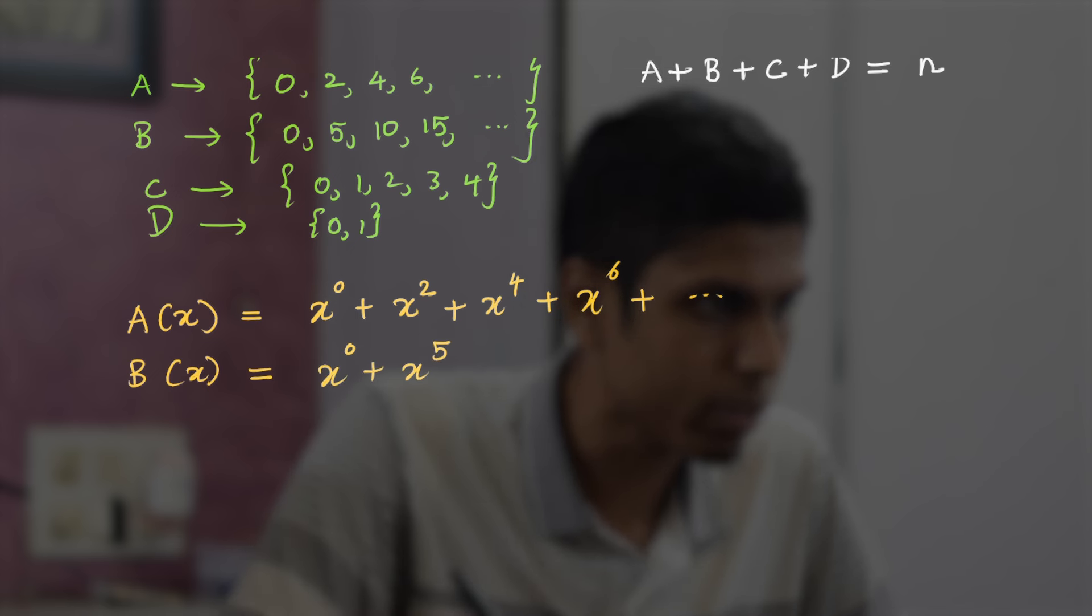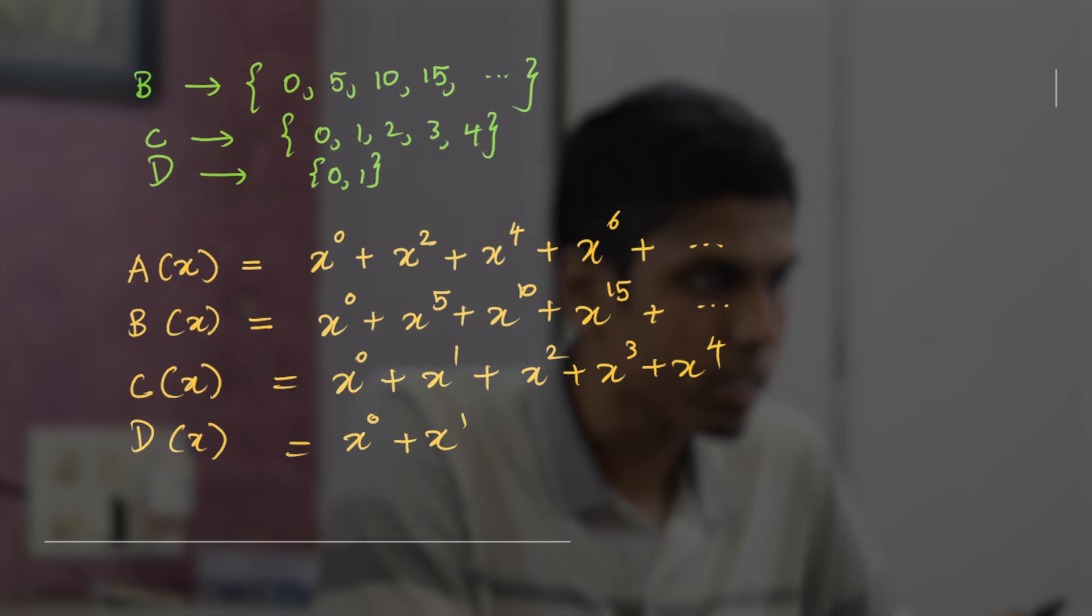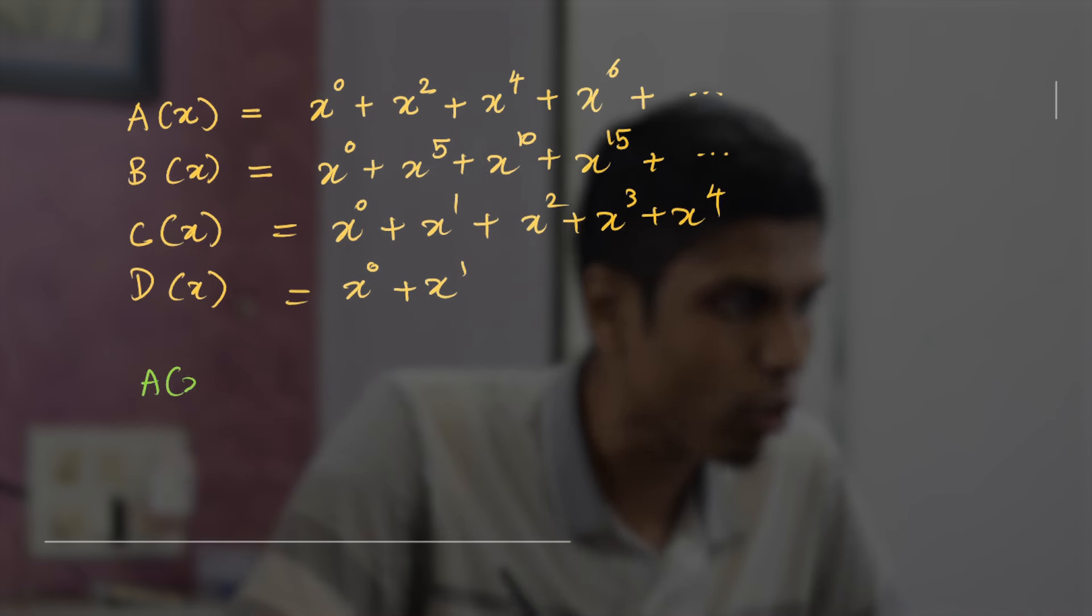Similarly, write B(x), the generating function for B, to be x^0 + x^5 + x^10 + x^15 and so on. And similarly, C(x) would be x^0 + x^1 + x^2 + x^3 + x^4, and D(x) would be x^0 + x^1.